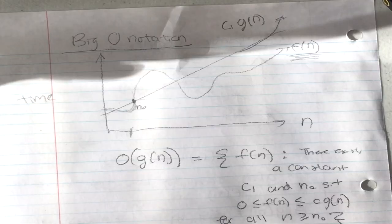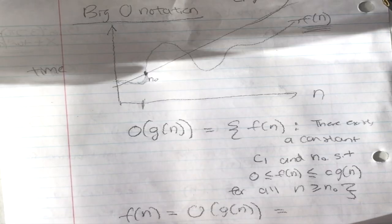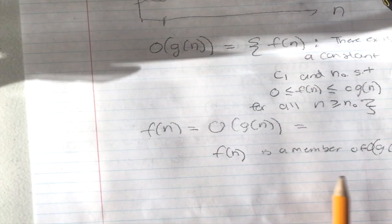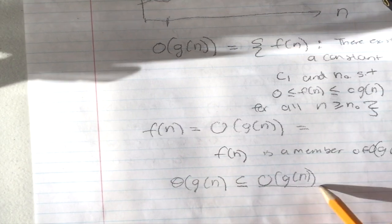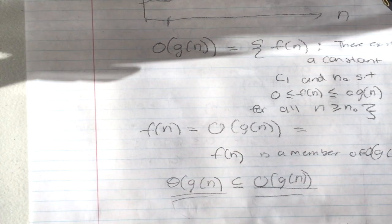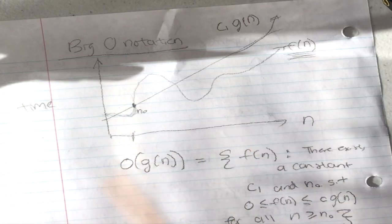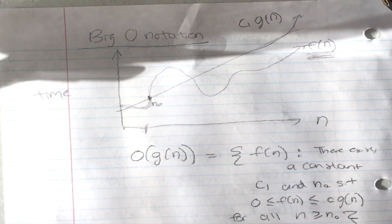You can also write f(n) as a member of O(g(n)) using set notation. Using set theory, theta g(n) is a subset of O(g(n)), because theta is squeezed between two constants while Big-O is just bounded above — so the tighter bound is a subset of the larger one. Big-O notation means there's an upper bound on the time complexity of your algorithm.